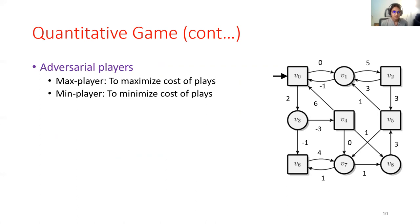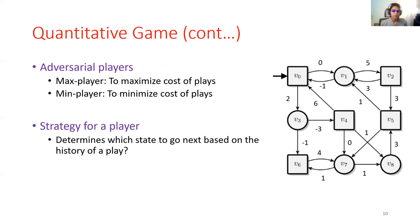We assume the players are adversarial towards one another. So, one player is a maximizing player, which maximizes the cost of plays. The other is a minimizing player. And finally, a strategy is just a set of instructions which tells the player where to move the token to based on the history of a play.